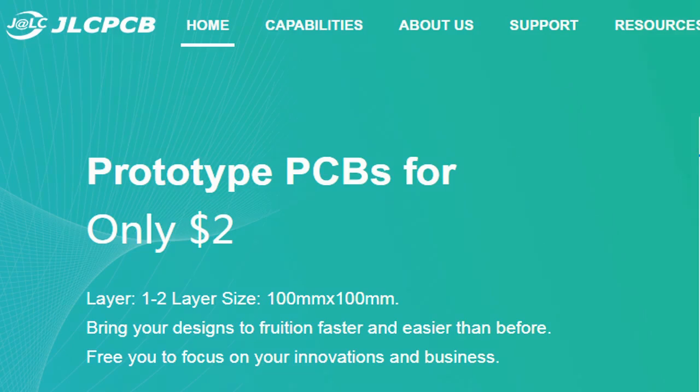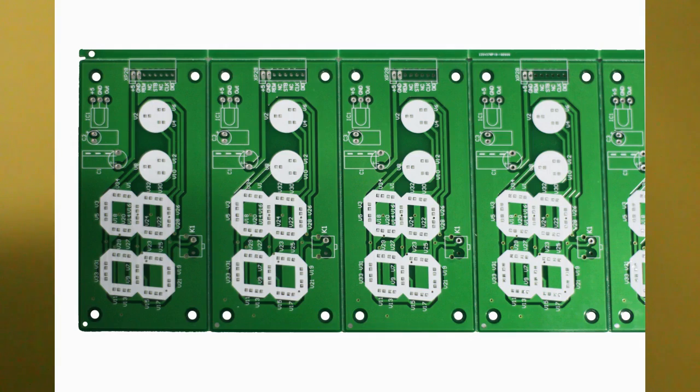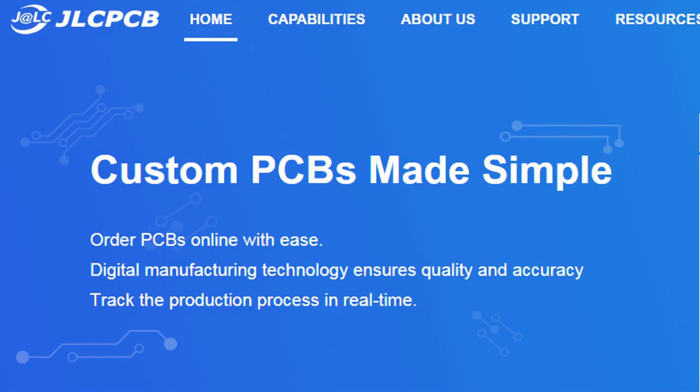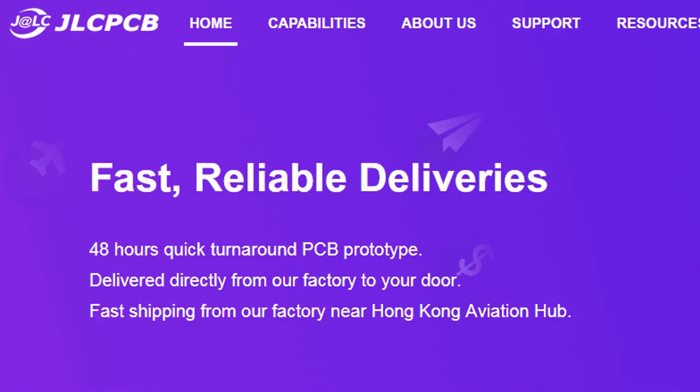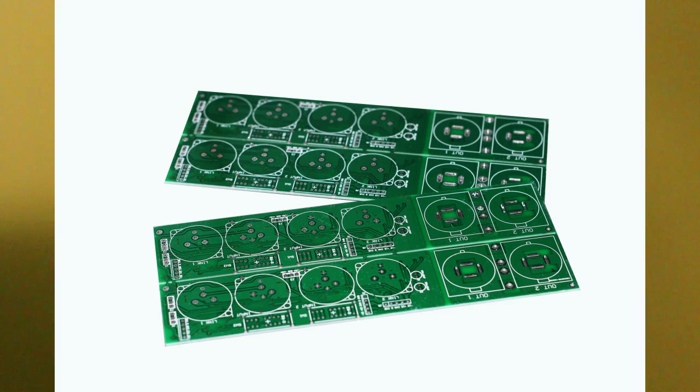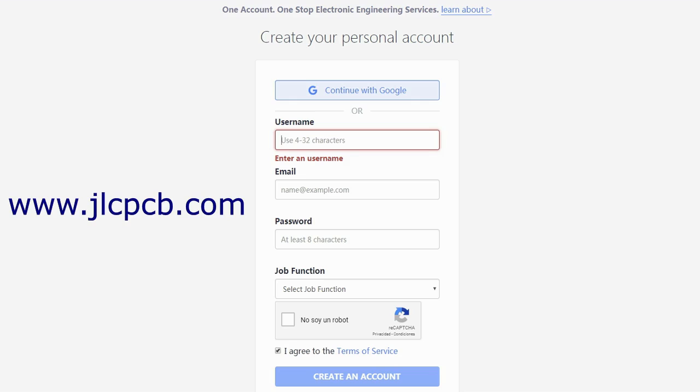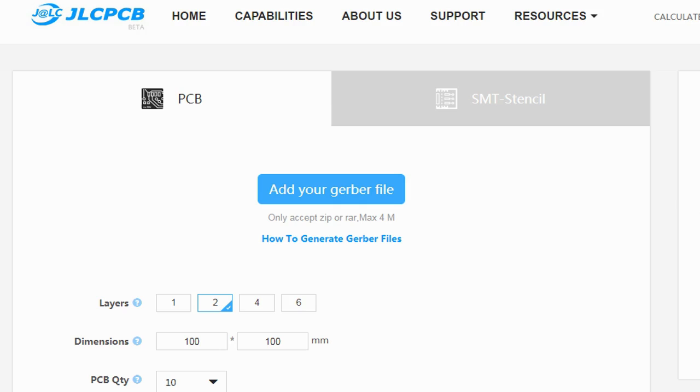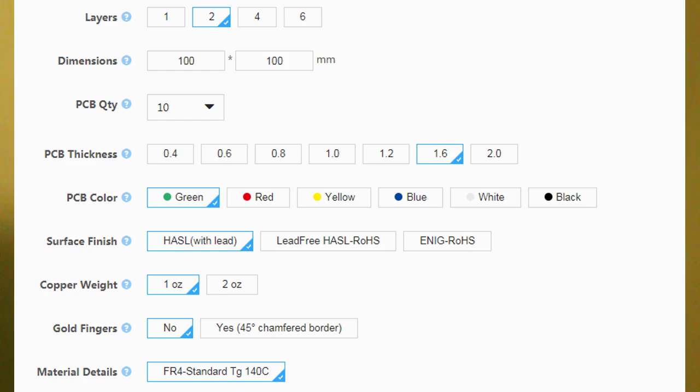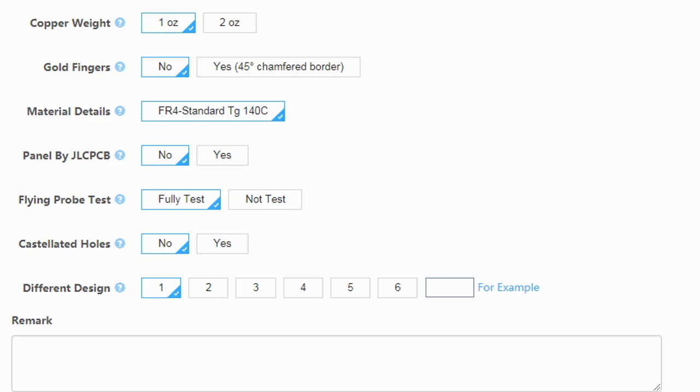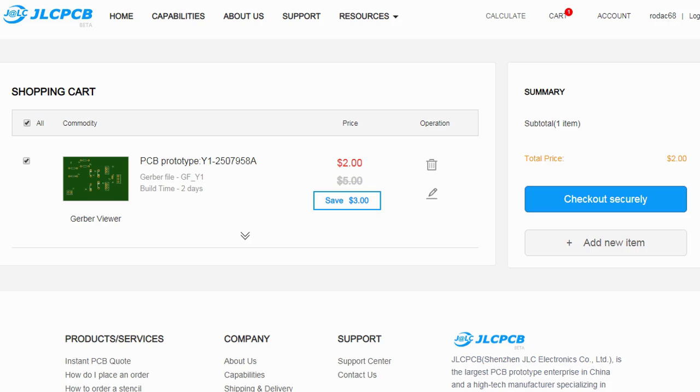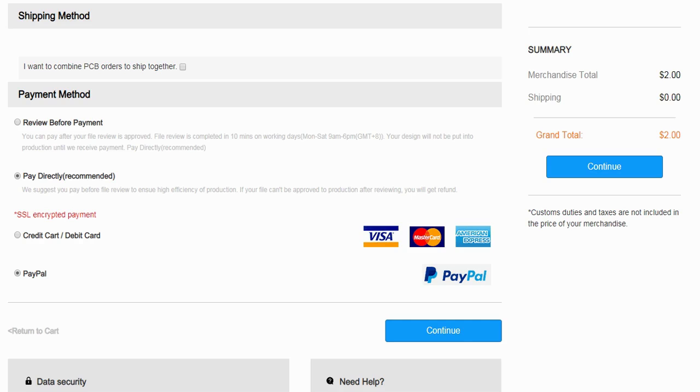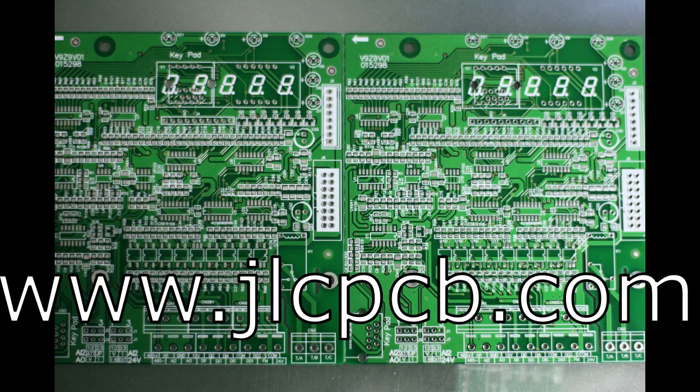This video is sponsored by JLCPCB. JLCPCB is a company that makes excellent quality PCBs at an unbeatable price. You can order boards online in minutes. After registration, upload your Gerber files, select the PCB properties, select the payment method, and place your order. Best price and quality for all your PCB needs.